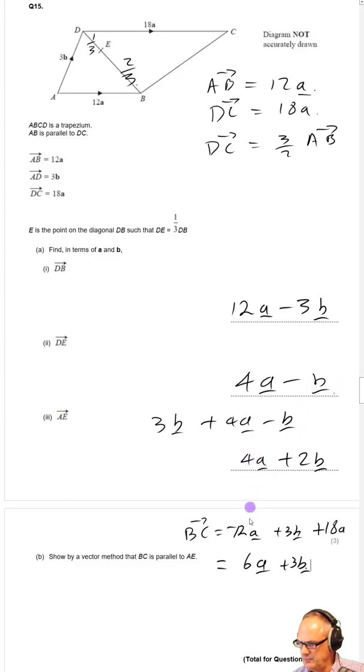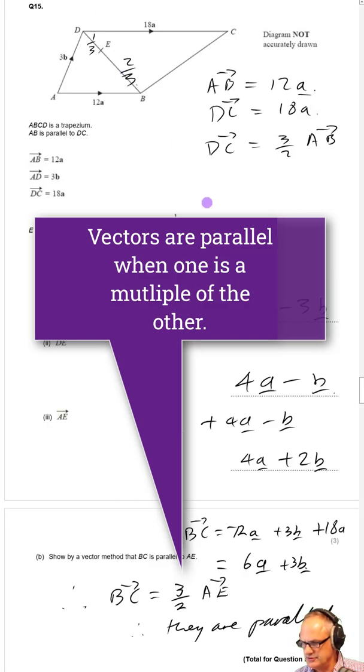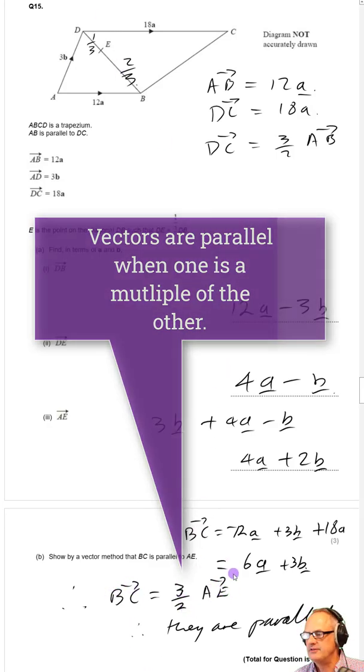Now what we can see is if we times 4 by one and a half we get 6, we times 2 by one and a half we get 3. Therefore BC will equal one and a half, three over two, times by AE. Therefore they are parallel because all we wanted to do is show that one vector was a multiple of the other vector to show that they are parallel.